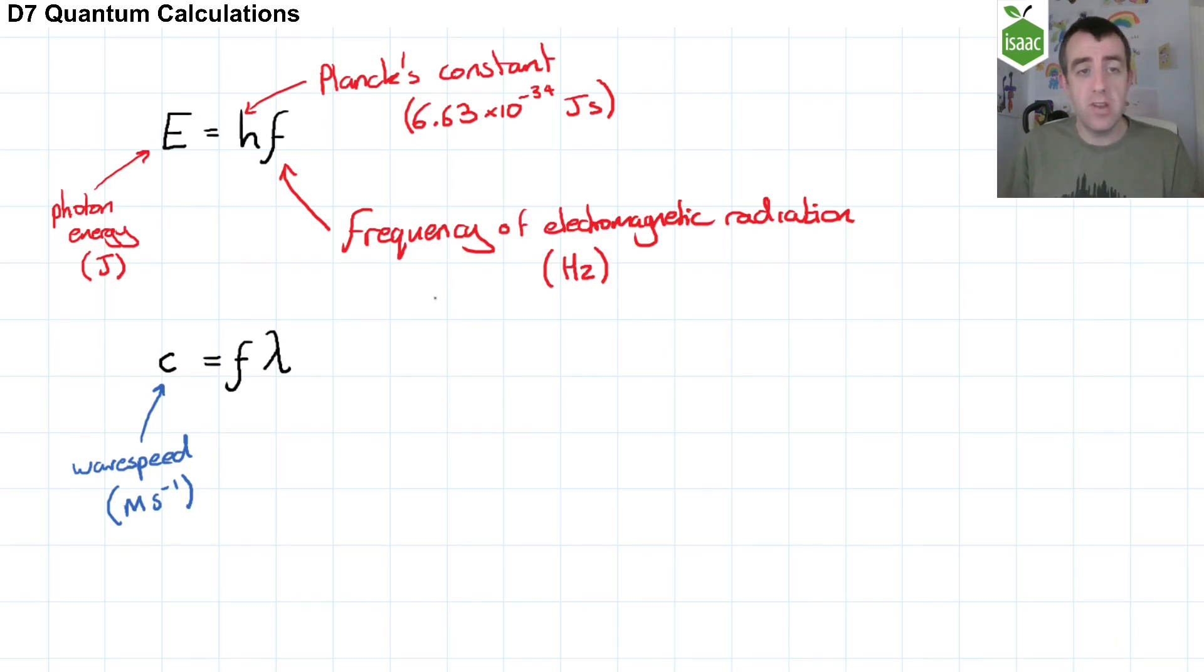C takes the value 3.00 times 10 to the 8 metres per second on Isaac Physics. F is the frequency of the electromagnetic radiation, and lambda is the wavelength, which is measured in metres. These two equations can be combined to get the energy of a photon when the wavelength is given.